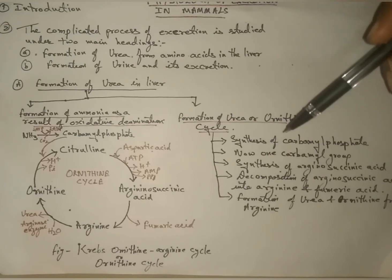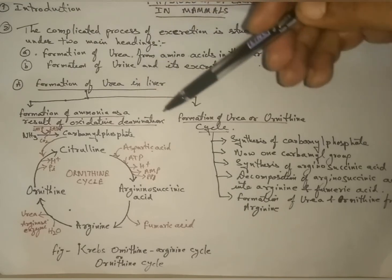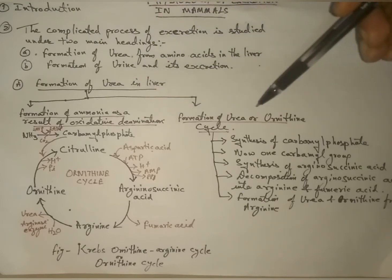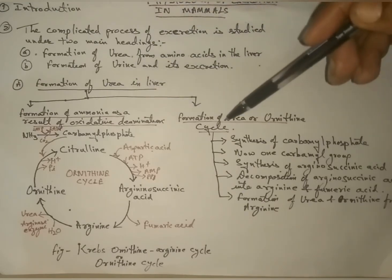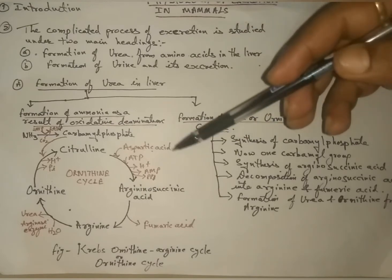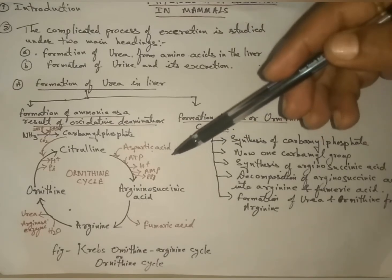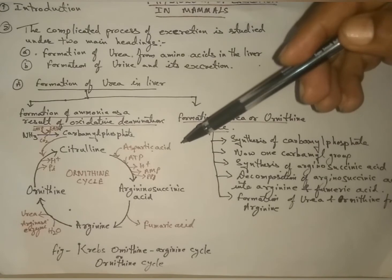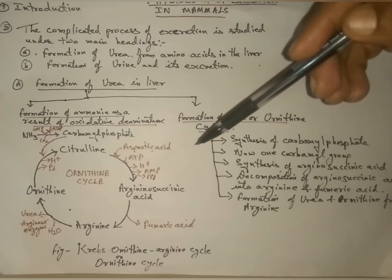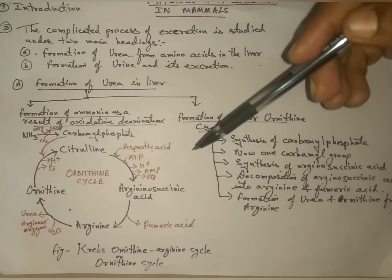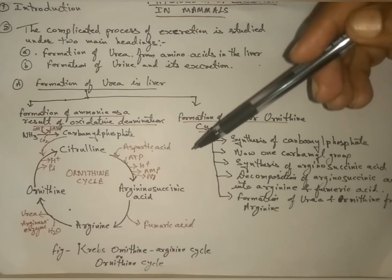Formation of urea in the liver is divided into two parts: formation of ammonia as a result of oxidative deamination, and formation of urea or ornithine cycle. The amino acids which reach the liver through hepatic portal system are used for constructive and functional activities.